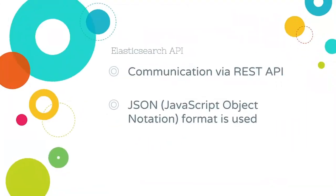You can communicate with Elasticsearch via REST API. Elasticsearch uses JSON — JavaScript Object Notation — format. You send your JSON document over HTTP to Elasticsearch, and you receive the response again as a JSON document.